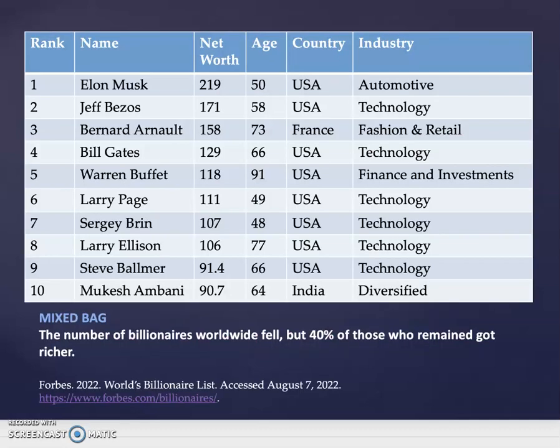From Forbes's 2022 World Billionaire List, we see wealth being consolidated. Forbes called this a mixed bag: the number of billionaires worldwide fell, but 40% of those who remained got even richer. Comparing this list to several years ago, Warren Buffett was at the very top with about half the net worth he has today. You can also see Elon Musk, Jeff Bezos, and a fortune made in France.